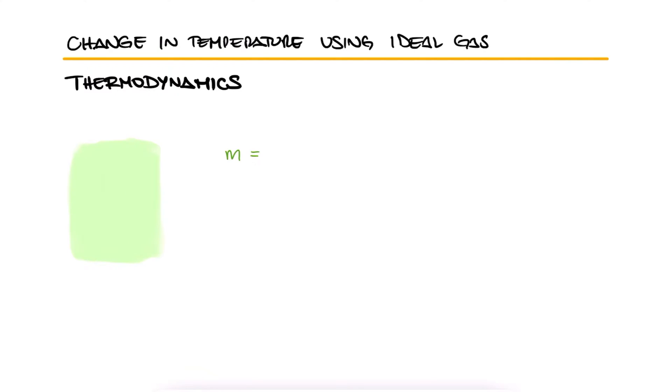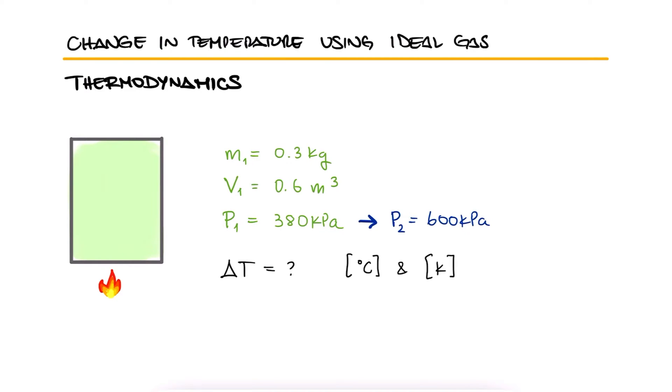A mass of 0.3 kilograms of helium fills a 0.6 cubic meter rigid vessel at 380 kilopascals. The vessel is heated until the pressure is 600 kilopascals. Calculate the temperature change of helium in degrees Celsius and Kelvin as a result of this heating.